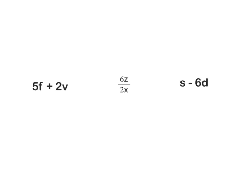From the last video you know that an expression is made with terms and math operations, and a term is made with letters and numbers. You know all the keywords for letters, numbers, and operations. So in here we have 5 multiplied by F plus 2 multiplied by Y. In here, 6 multiplied by Z divided by 2 multiplied by X. And in here, S take away 6 multiplied by D.